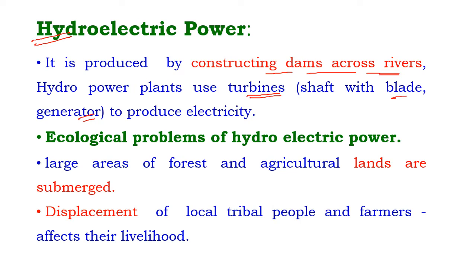The ecological problems of hydroelectric power: large areas of forest and agricultural lands are submerged for the construction of dams. Moreover, the displacement of local and tribal people and farmers from their native place, which also affects their livelihood, is a serious problem of constructing dams.